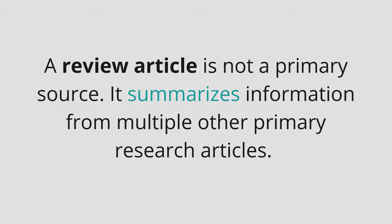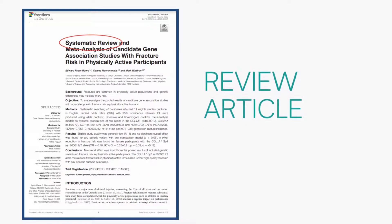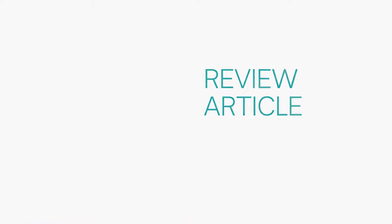You may encounter review articles. A review article is not a primary source — it summarizes information from multiple other primary research articles. This is an example of a review article. Notice it says systematic review in the title. However, all review articles won't be labeled so plainly. So remember that a primary source will be original research from one specific scientific study.